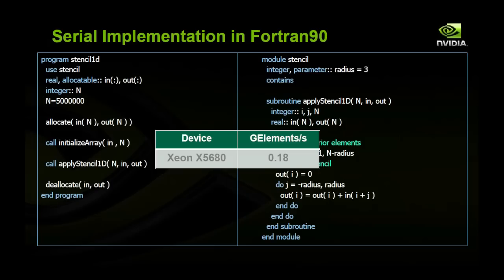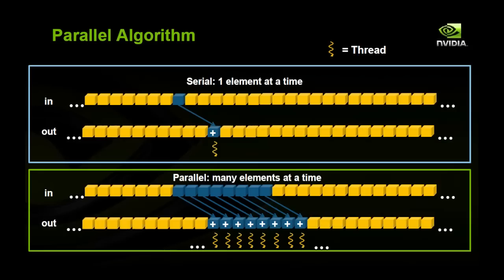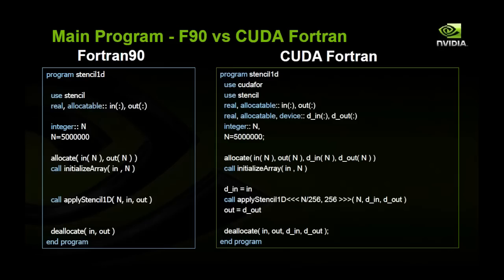Now let's look at how the parallel algorithm works. At the top I have the serial algorithm, and on the bottom the parallel algorithm. When the serial algorithm has one thread executing the sum, in the parallel algorithm there are many threads executing simultaneously, as illustrated by the orange squiggly lines. Everything else is the same except it's now occurring multiple times in parallel, so after one pass many elements have been processed as opposed to just one.